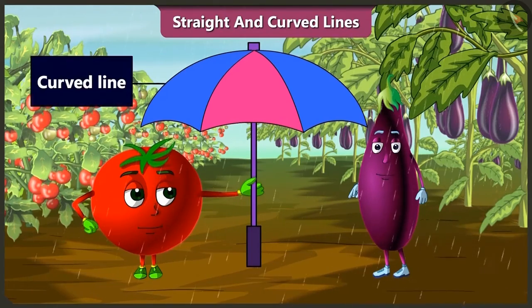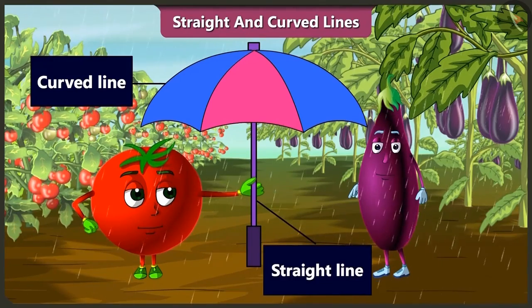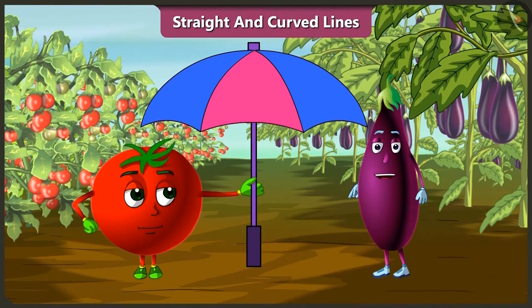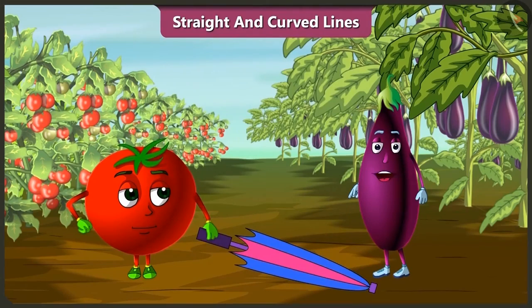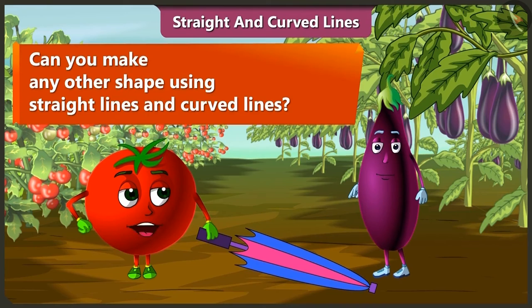The umbrella is made using both curved and straight lines. Tingu says the rain has stopped, but they will keep the umbrella with them just in case. Can we make any other shape using straight and curved lines, like we made the umbrella? Come on, think!